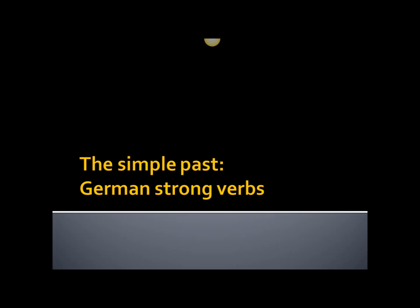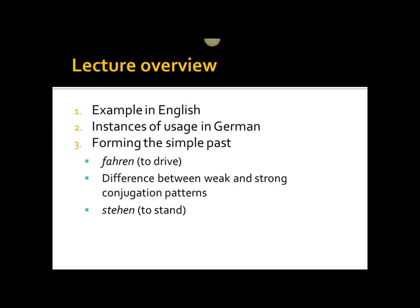We're going to be taking a look today at the simple past using German strong verbs. As usual, we will begin our lecture with an example in English before moving into a brief discussion of when we use the simple past in German. Then we're going to dive into forming the simple past using two strong verbs: fahren, to drive, and stehen, to stand. Both verbs reveal specific ways we can use the simple past with strong verbs. Between our discussion of these two verbs, we'll briefly highlight the slight differences in the conjugation pattern between weak and irregular verbs and German strong verbs.